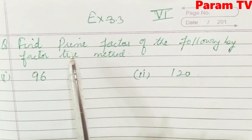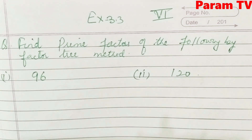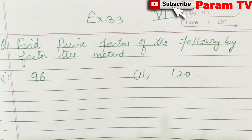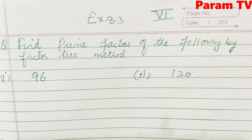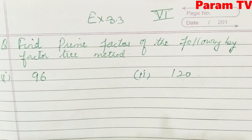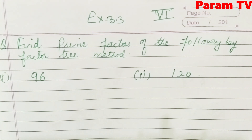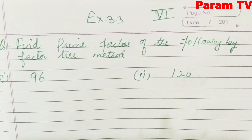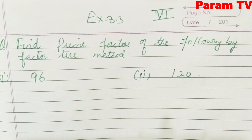First question is: find the prime factors of the following by factor tree method. All factors and prime factors are very different. All factors means all factors, and prime factors are only the numbers that are prime. When they are composite, we can further divide them. Here we have asked for prime factors; in the previous exercise we saw all factors. So don't confuse prime factors and all factors — all means all, and prime means only prime factors.